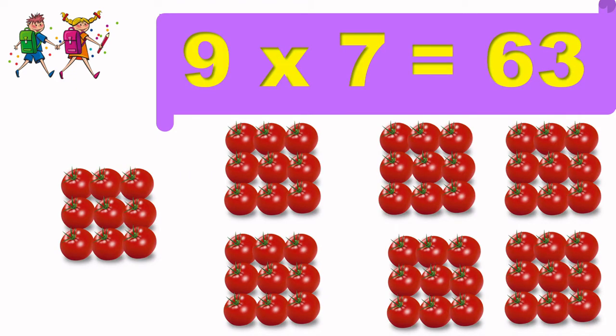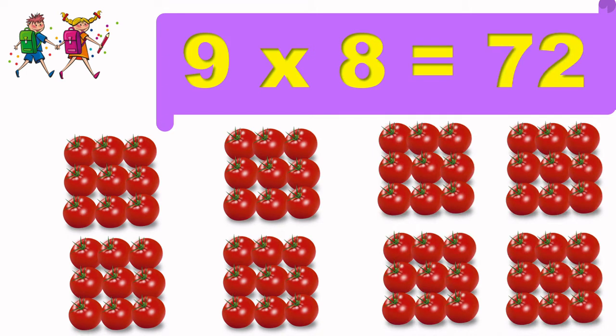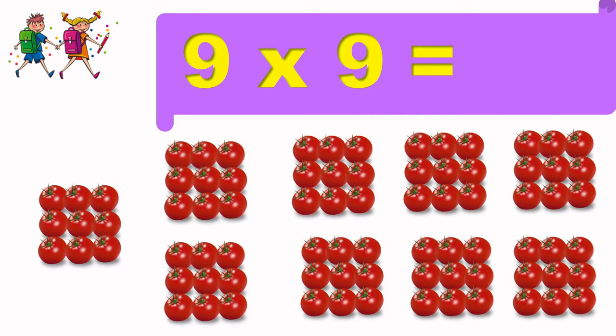9 sevens are 63. 9 eights are 72. 9 eights are 72. 9 nines are 81. 9 nines are 81.